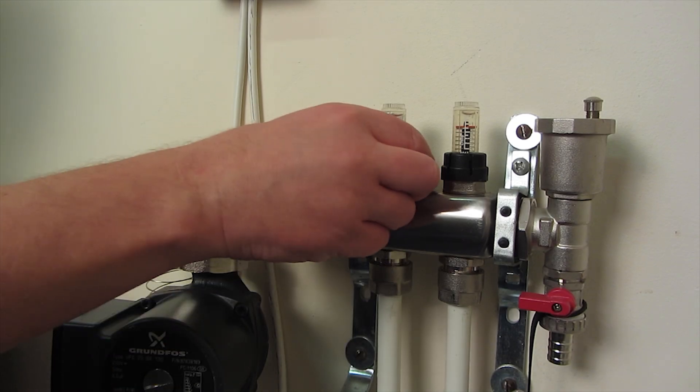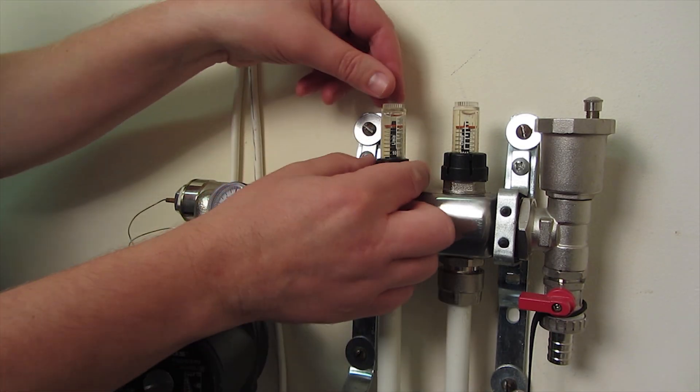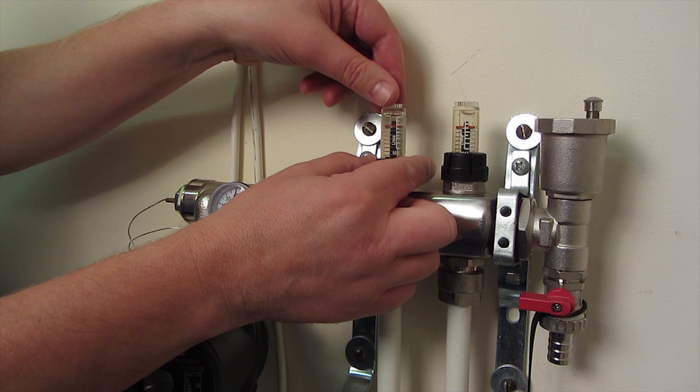To adjust the flow gauge simply remove the lock clip and turn the black nut at the base of the flow gauge by hand.